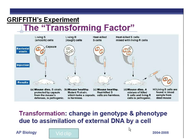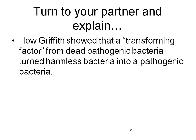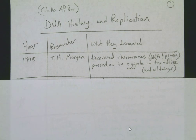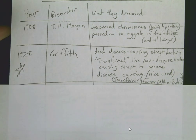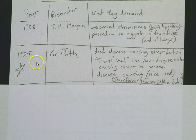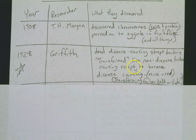He called the thing that transformed the living cells from non-disease-causing to disease-causing the transformation factor. He wasn't sure what it was, but DNA was the main culprit, in addition to proteins. Dead disease-causing strep bacteria transformed live non-disease-causing strep bacteria into disease-causing bacteria, using mice. The transforming factor was either DNA or protein — they didn't know at that time.